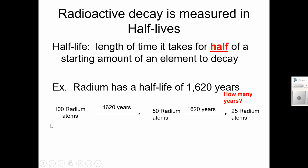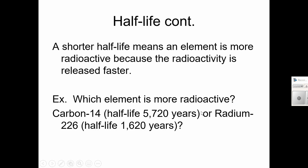And you could keep going and going and going until there were no atoms left. So total for this, for how long does it take for 75% to decay, would be 3,240 years. If an element has a shorter half-life, it's more radioactive because it's going to release that energy in those smaller particles faster. So which element's more radioactive? Carbon-14, which has a half-life of 5,720 years, or radium-226, which has a half-life of 1,620 years? The answer, radium-226, because it has that shorter half-life.